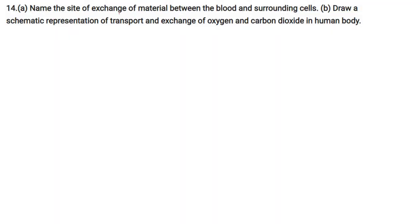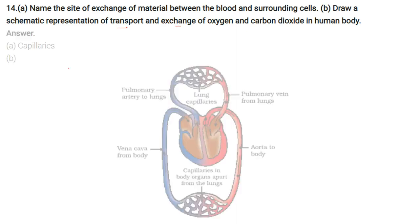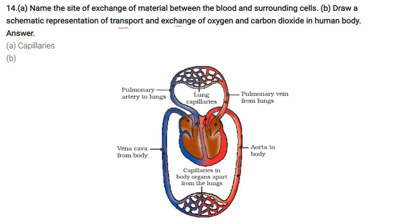Name the site of exchange of material between blood and surrounding cells, and draw a schematic of O2 and CO2 transport in the human body. The diagram shows the pulmonary artery to lungs, pulmonary vein from lungs, lung capillaries, vena cava from body, aorta to body, and capillaries in body organs apart from the lungs.